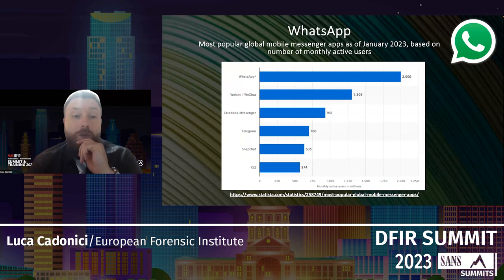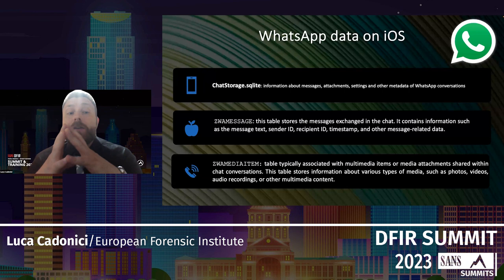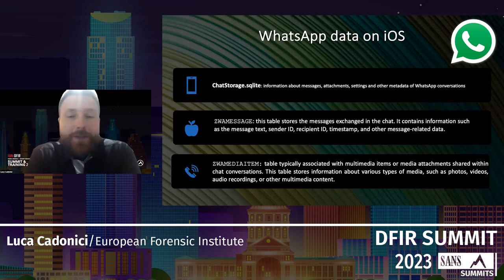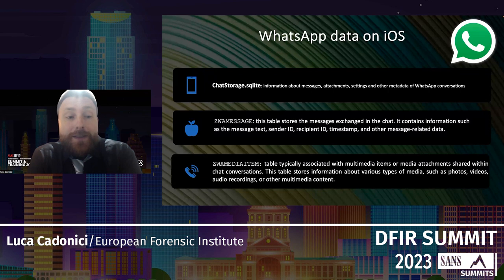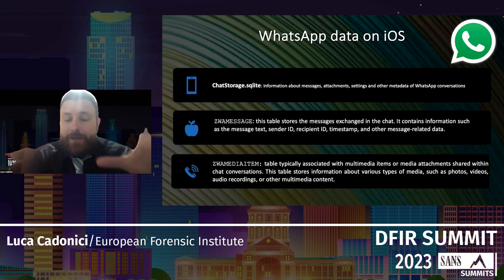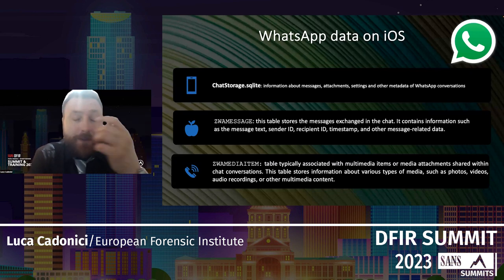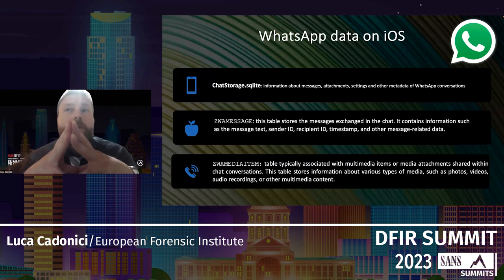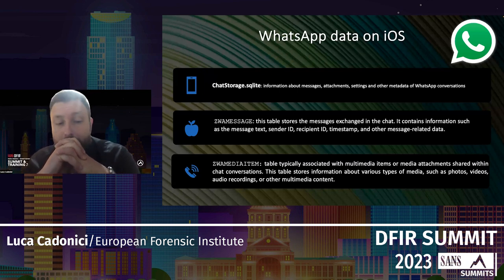WhatsApp is the most common app in the world. It stores everything about messages, attachments, and settings in the database chatstorage.sqlite. SQLite databases are crucial in mobile forensics because they store a great part of the data we analyze. In this database we have two tables of interest: ZWAMESSAGE, which relates to message content — sender ID, recipient ID, timestamp — and ZWAMEDIAITEM, which stores information about shared media or attachments, and is far more interesting when it comes to recovering data evidence.